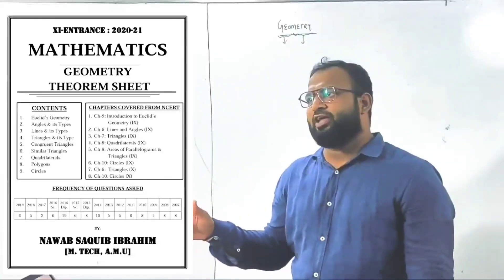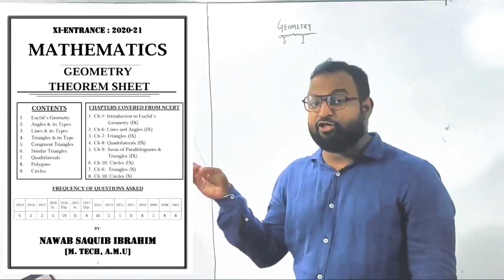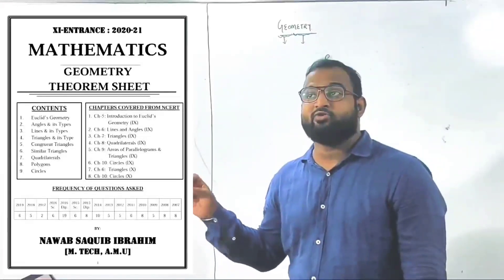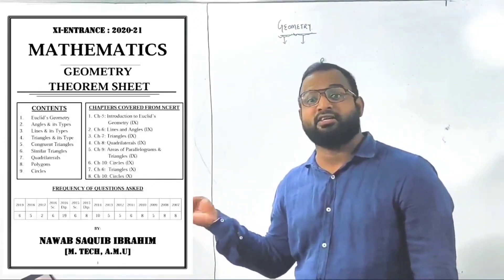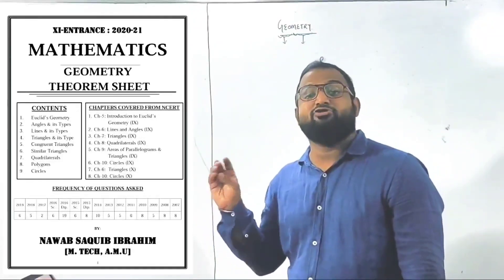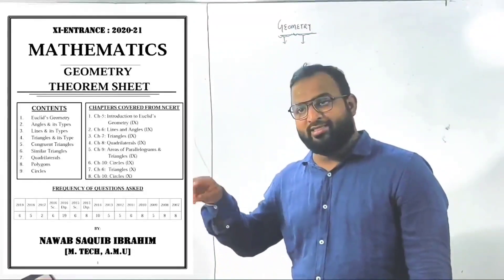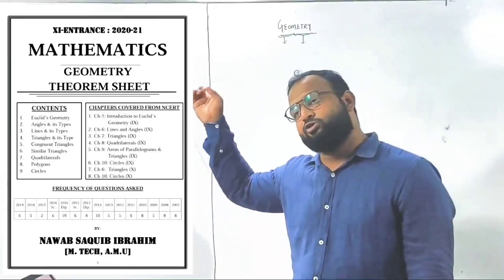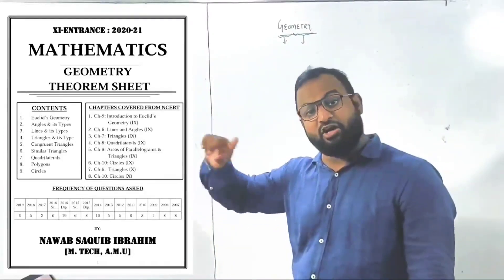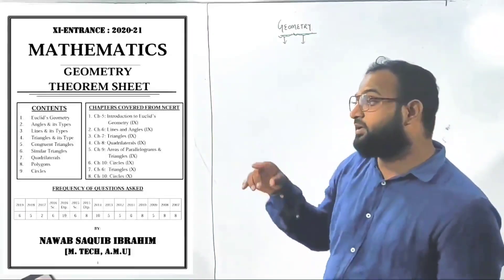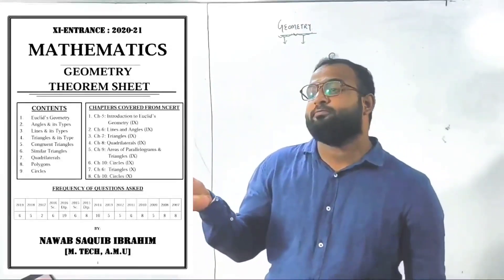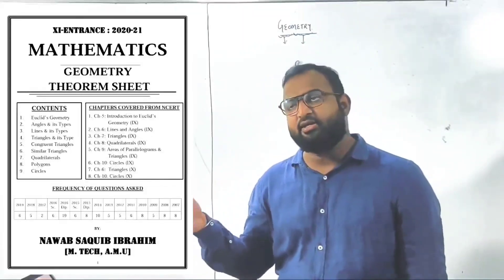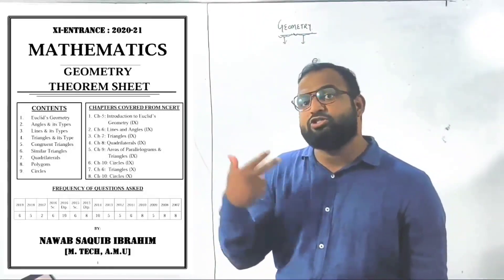When you study Class 9th, there is chapter 5: Introduction to Euclid Geometry, chapter 6: Lines, chapter 7: Triangle, chapter 8: Quadrilateral, chapter 9: Area related to Parallelogram and Triangle, chapter 10: Circle — that is 6 chapters in geometry from 9th. From Class 10th, there are 2 chapters: chapter 6 on similar triangles and chapter 10 on Circles.